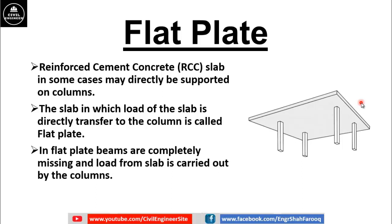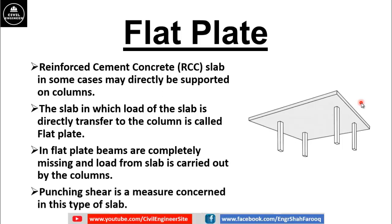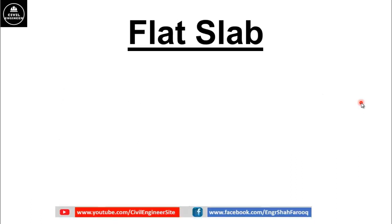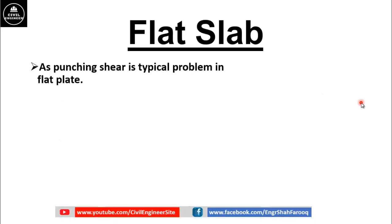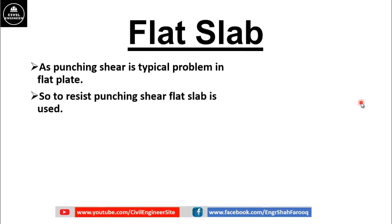The slab in which the load is directly transferred to the column is called a flat plate. In flat plate, beams are completely missing and load from the slab is directly transferred to the columns. In flat plate, the main concern is punching shear.